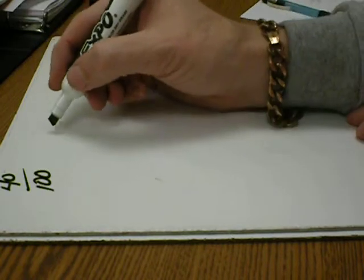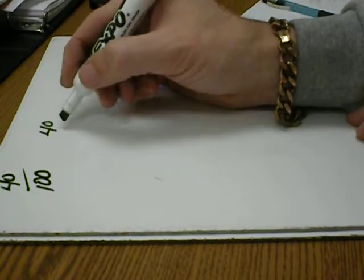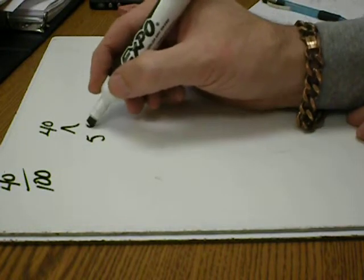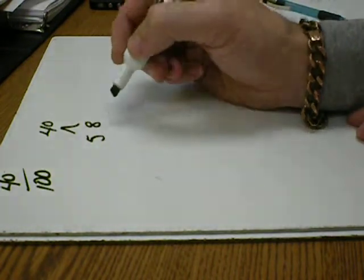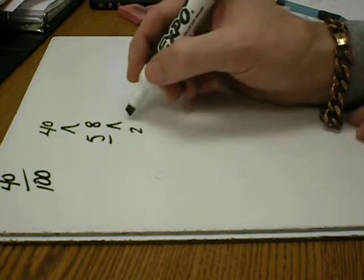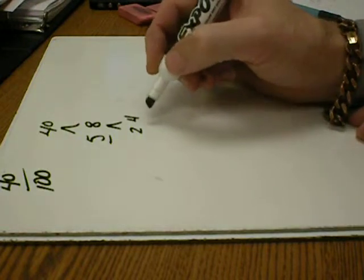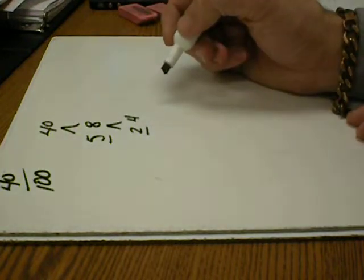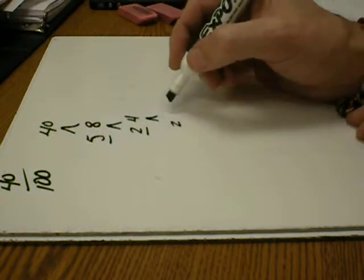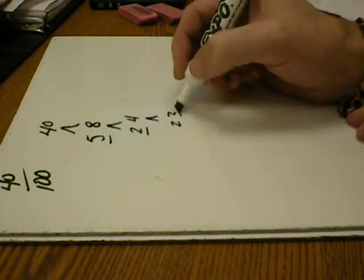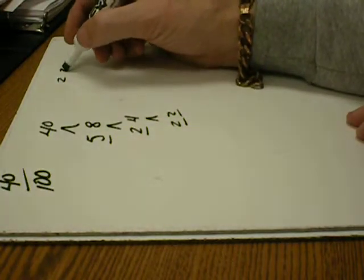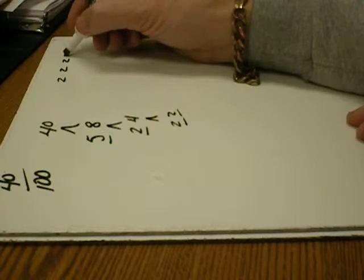So if I do the pine tree method, if you do 40, factors of 40, you can do 5 times 8. 8 is prime, so you're finished there. Okay, 2 times 4 is 8. That's prime. And then we can do 2 times 2. So the factors of 40 would be 2, 2, 2, and 5.